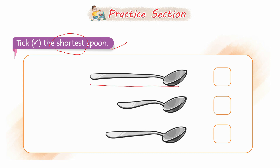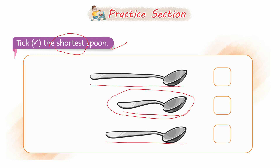If you look at this length, this spoon is so big. If you look at this one, this is also so big. But this one is so small. This means that this spoon is small — this is the shortest spoon.